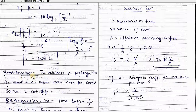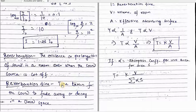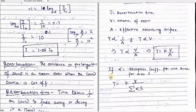Next comes: what is reverberation? Reverberation is the existence or prolongation of sound in a room even when the source of sound is stopped. It is the effect from when we first listen to the sound at full intensity to the level where it is no longer audible. This persistence of sound is called reverberation, and the time for this sound to fade away or decay in a closed space is called the reverberation time.